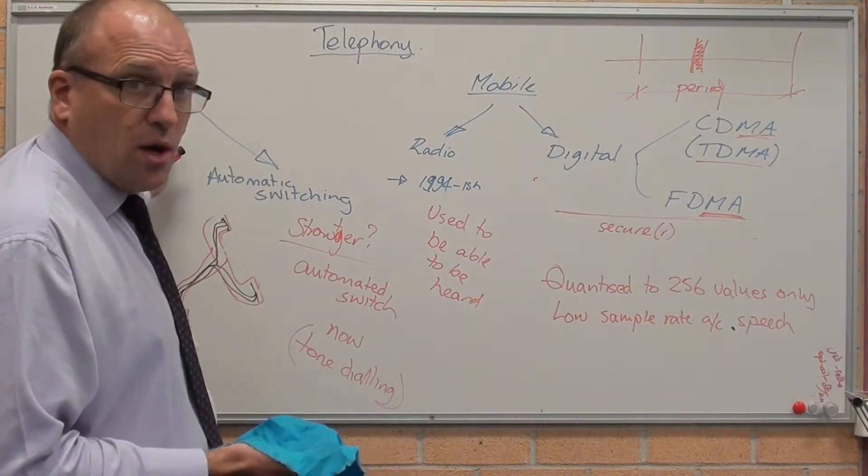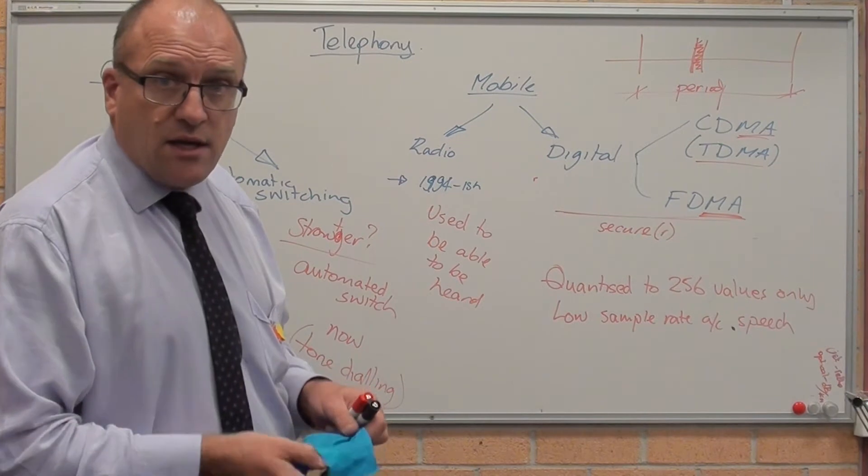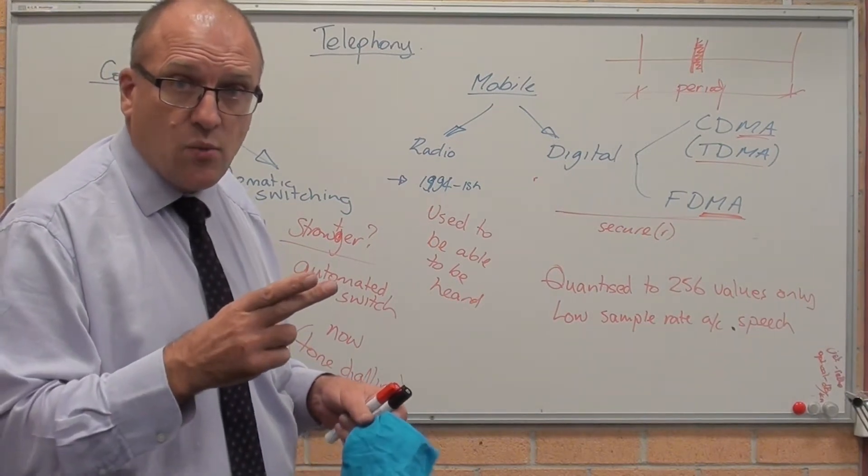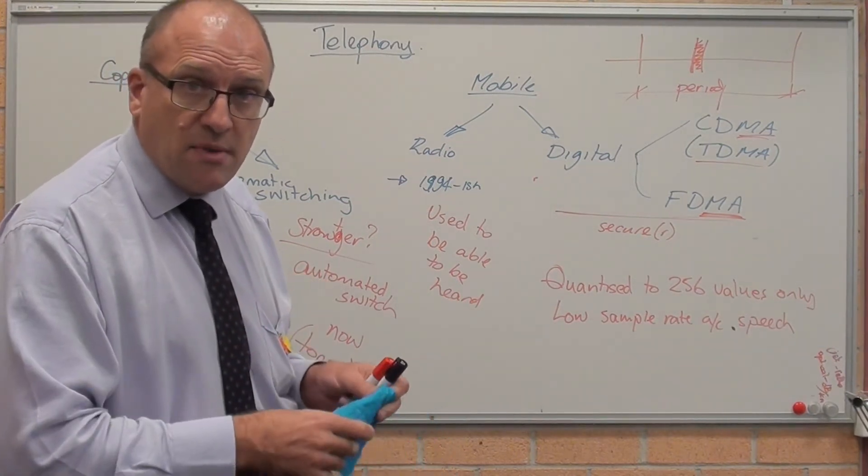So that's the old school copper line. Now, as you know, twisted pairs were used to transmit to minimize crosstalk.